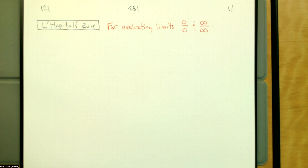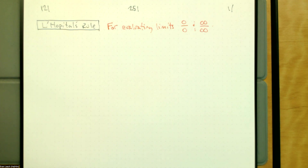Because zero over zero — we don't just say undefined when it's zero over zero. If it's a constant divided by zero, like one divided by zero, that's undefined; we can't assign a value to that. Zero over zero might be something depending on those zeros. The reason we get indeterminate forms is that we're not just looking at a static zero over zero — we're thinking about what's happening as we're approaching zero. That's the indeterminate form part.